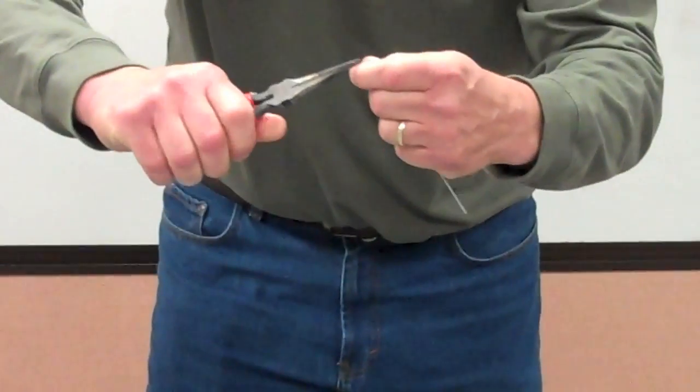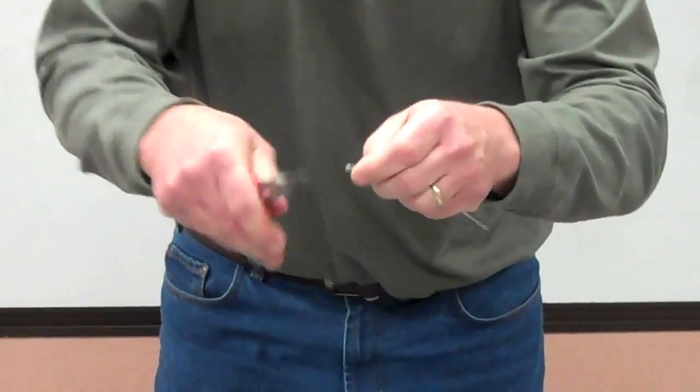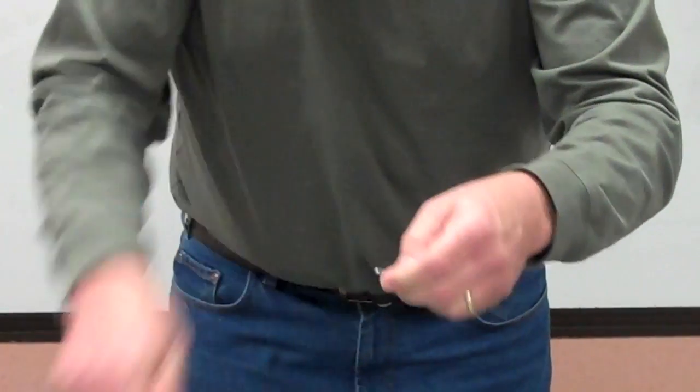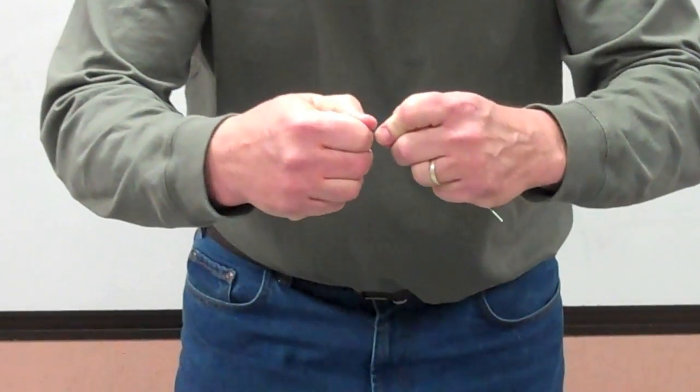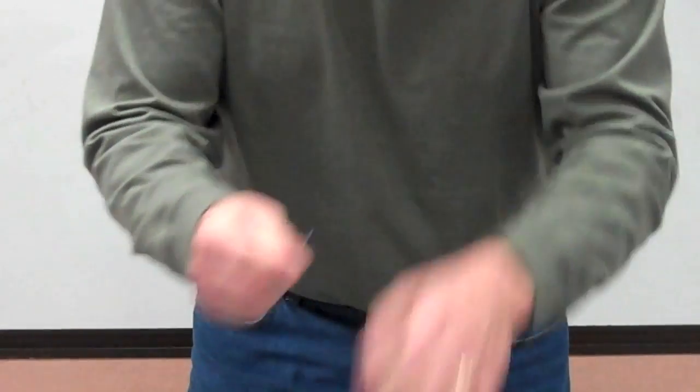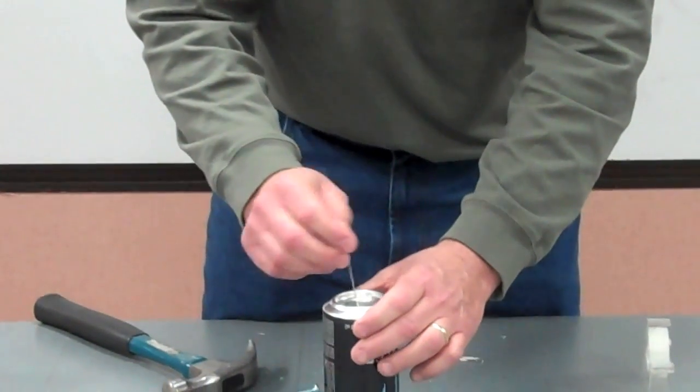Then, with the needle-nose pliers, you're going to take the very, very end of it, and you're going to bend it over to make a hook. And you want to make your hook pretty small, because this hook is going to end up going through the hole you just made in your can.